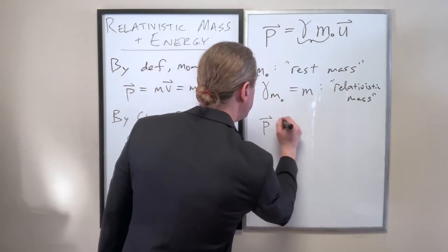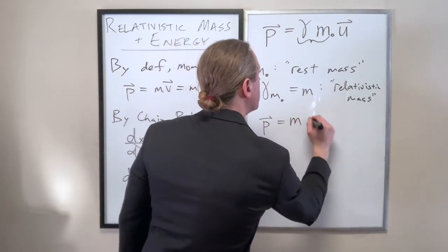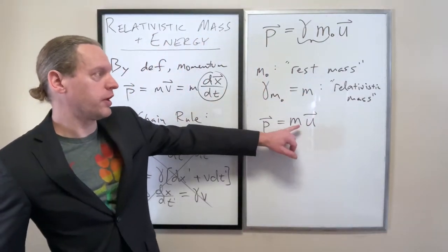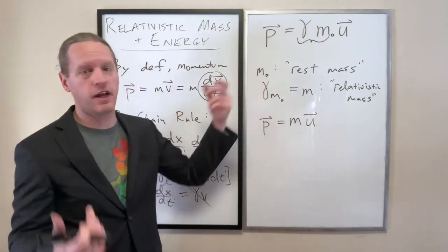And gamma M0 is what we're going to call just M, which is the relativistic mass. So we can write P as MU if you want, where you view M as specifically the relativistic mass, where you've already incorporated gamma and M0 there.